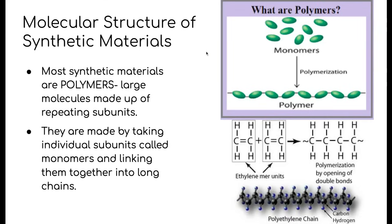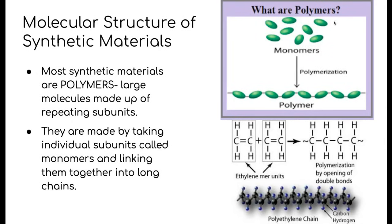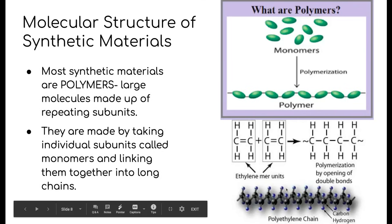Let's talk about the molecular structure of synthetic materials. Most synthetic materials are what we call polymers — poly meaning many. A polymer is simply a very large molecule made up of repeating subunits which we call monomers. In the process of making a synthetic material, lots of smaller subunits called monomers are strung together through the chemical process to create long chains of these repeating subunits.